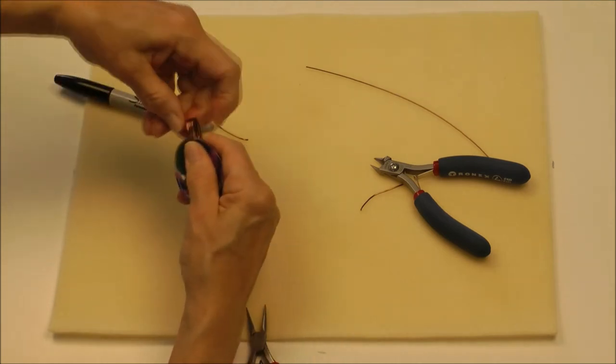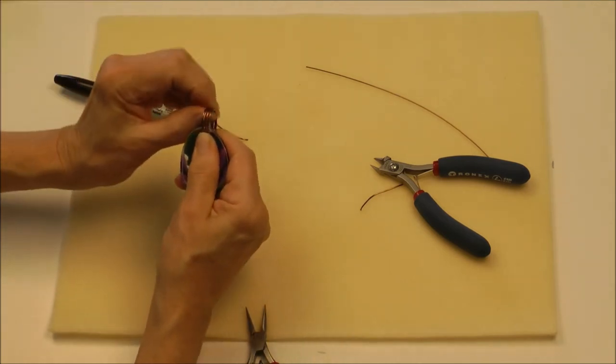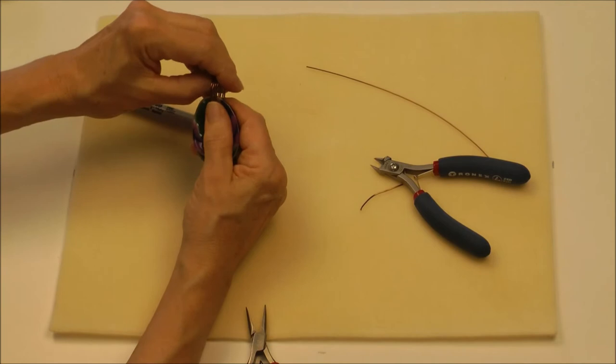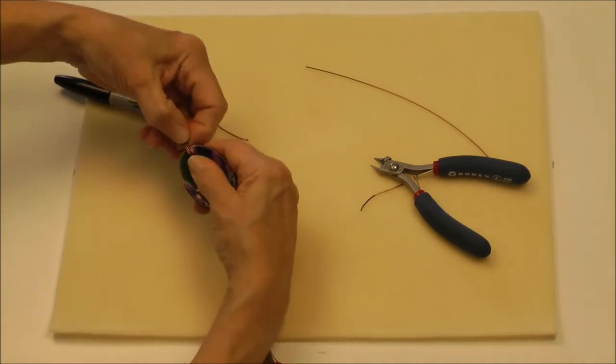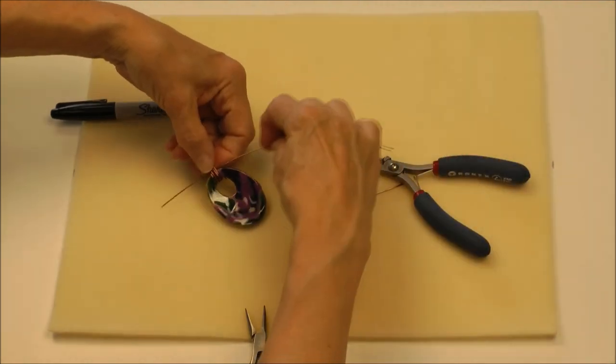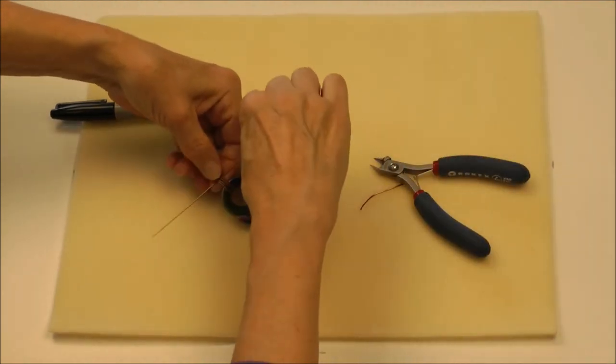Now, the bail does tend to want to separate a little bit. I might like that look and can use that as part of the decoration, or if I want to hold it together more, I can take a piece of 20 gauge wire and insert that in there.